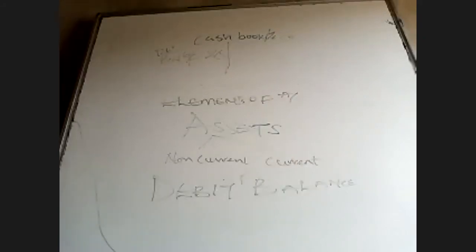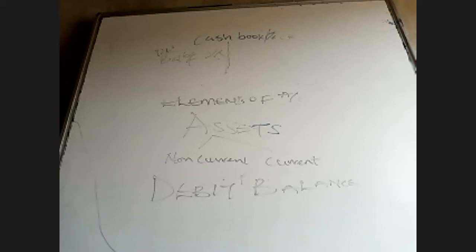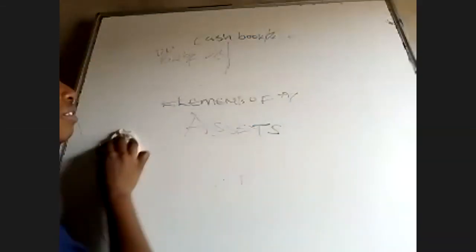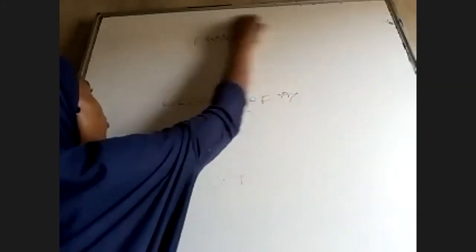Going forward, when you see components under the asset account classified under non-current and current, you'll be able to conclude that yes, all assets have a debit balance. So you won't need to go back and forth asking what you're debiting and crediting. Anything coming into the asset account is debited, and anything moving out is credited. That's the rationale behind 'debit the receiver and credit the giver.'